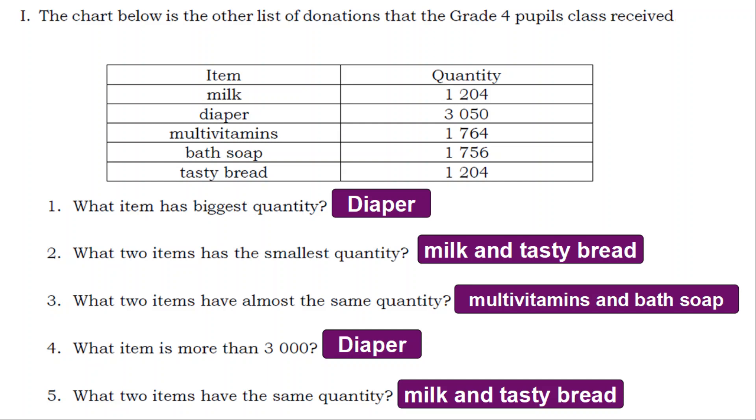4. What item is more than 3,000? Diaper.